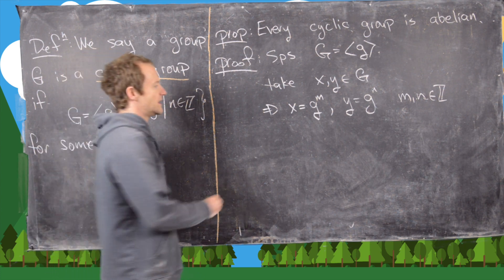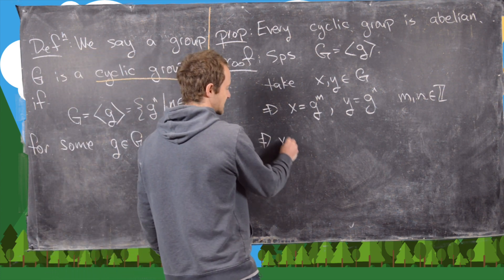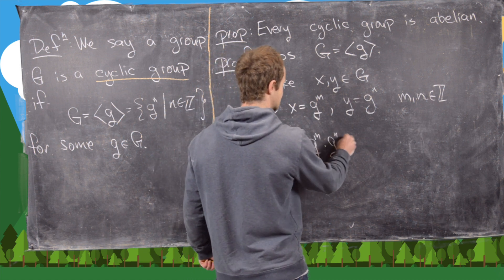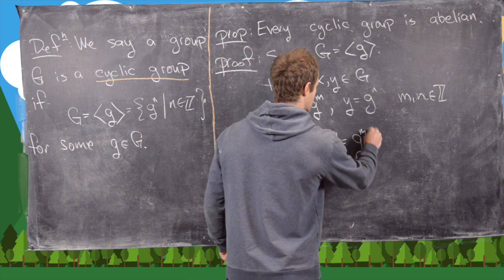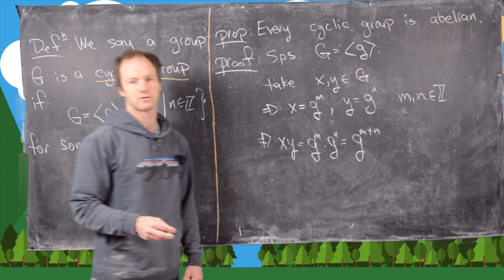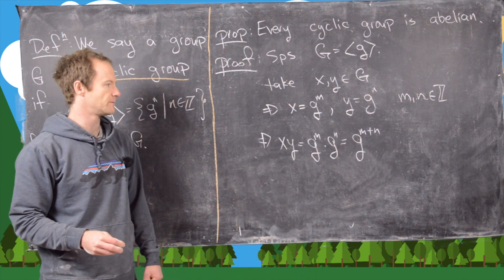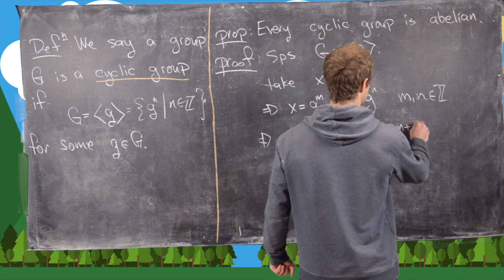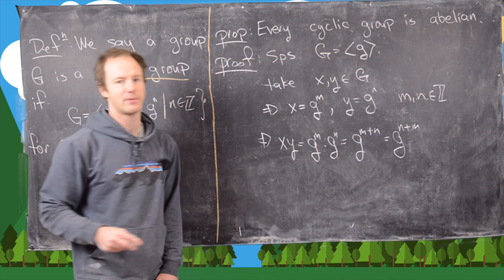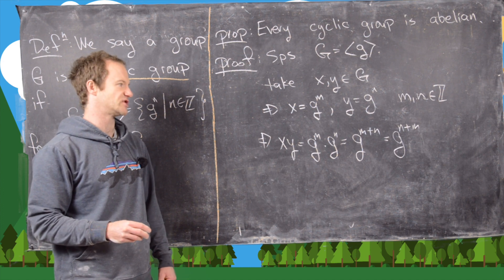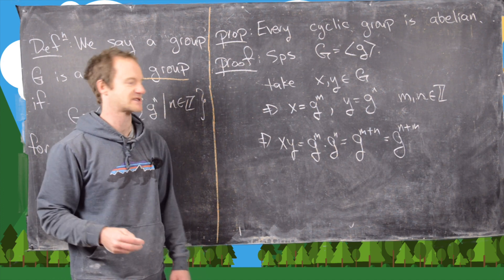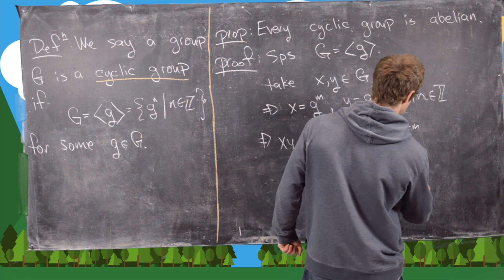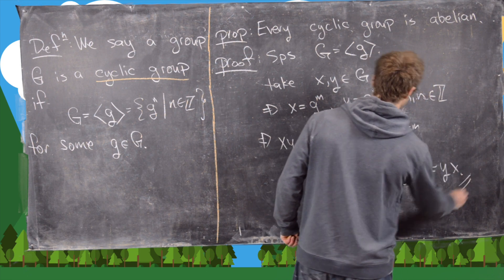Now let's notice that x times y is the same thing as g to the m times g to the n, which is g to the m plus n because we have exponent rules in the group. But now that's equal to g to the n plus m because the operation happening in this exponent is just addition of integers and we know that's commutative. But now that's exactly g to the n times g to the m, which is y times x.